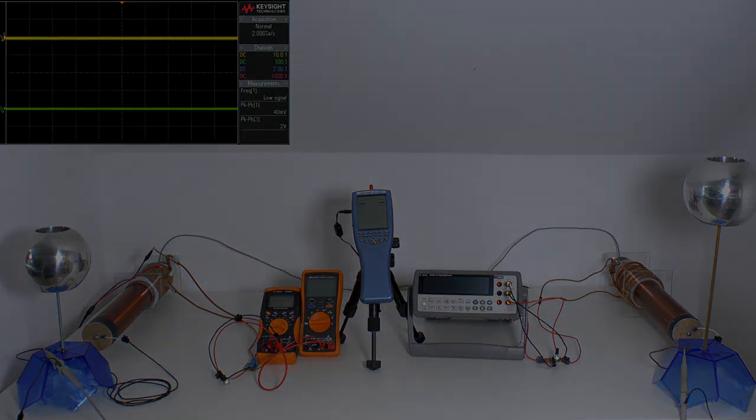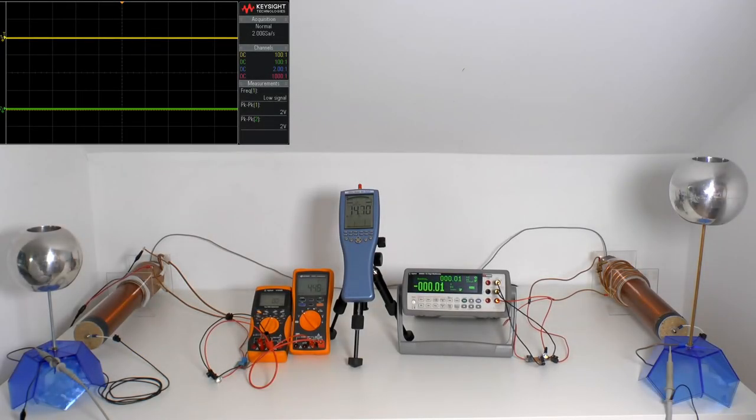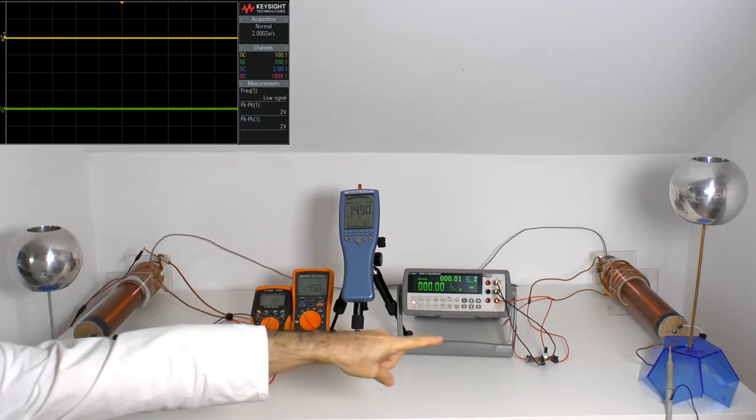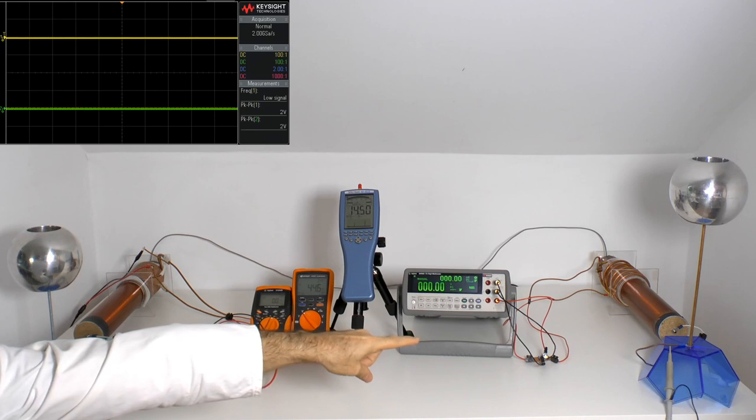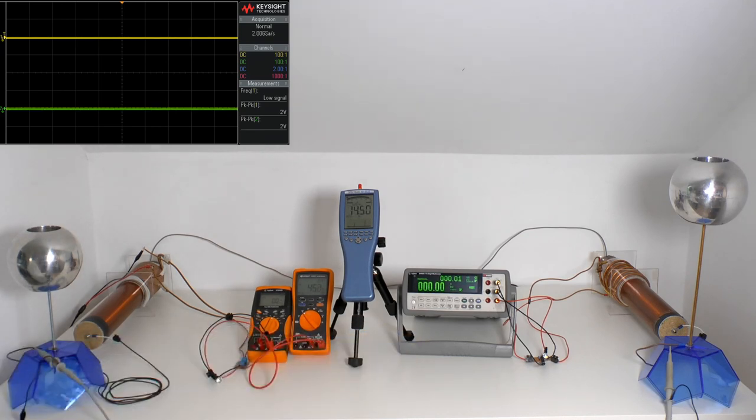I will demonstrate now. So I have prepared now my table for the experiment. Please observe also the oscilloscope in the top left corner. The yellow line is here for the transmitting side and on the other side is the receiver in green. So you can read the voltage you will see also the waveform.